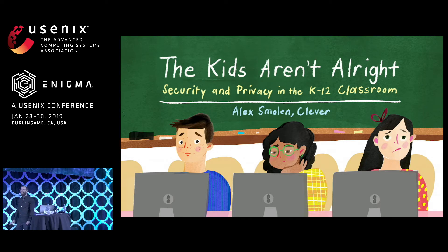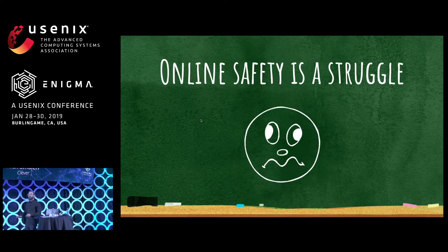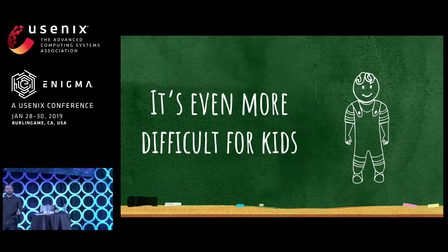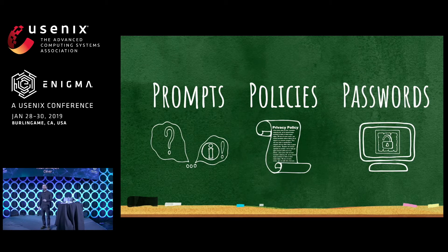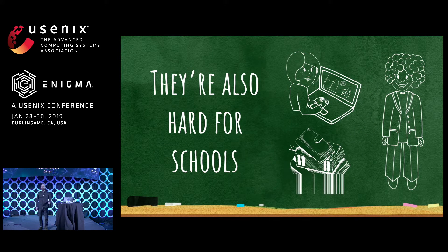Today, I'd like to talk about the mismatch between the security and privacy tools that we design and kids in the K-12 classroom. If you're concerned about your safety online, you know it's a struggle out there. It's even tougher for kids who are exposed to computers earlier and more frequently than ever. As adults, we may be frustrated by the permission prompts, privacy policies, and passwords that are intended to keep us safe. But for kids, these tools don't make sense, and they're also tough for the teachers, administrators, and software companies trying to help kids access technology in school.